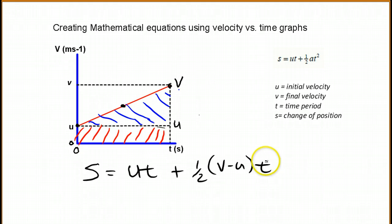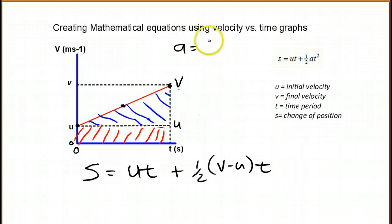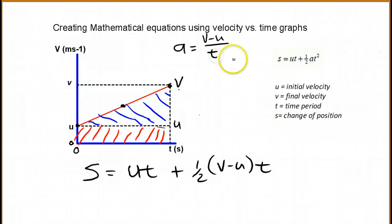We want to get acceleration involved in this, so we're going to use the base definition of acceleration, which is really the slope of the line that is trending upward. That's change in velocity: V minus U, over T.